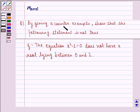The question says, by giving a counter example, show that the following statement is not true. The statement Q is, the equation x² - 1 = 0 does not have a root lying between 0 and 2.